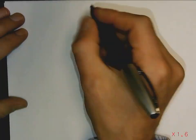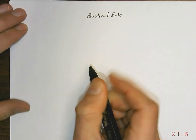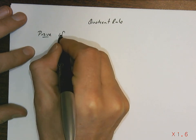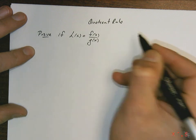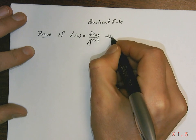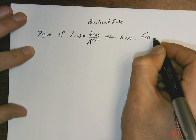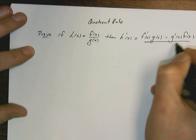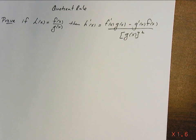OK, guys, let's take a look at a proof for the quotient rule. The proof for the quotient rule will look like this. We want to prove that if h of x is given by a function divided by a function, then the derivative is equal to the derivative of the top times the bottom, subtract the derivative of the bottom times the top, all over the bottom squared. So that's what we're going to want to prove.